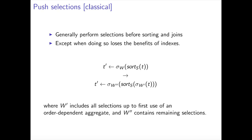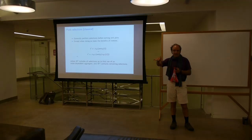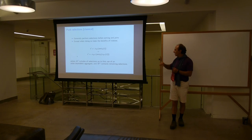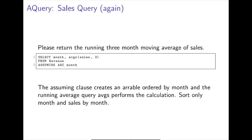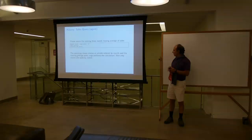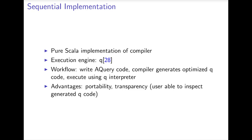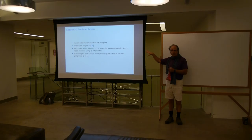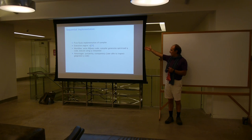So instead, you try to sort as late as possible. In our running example, we'll only sort the two fields that are concerned: month and sales. Our implementation is in Scala. What we would really like is to implement it in Q, but Scala offers — as Jose will argue later — a declarative way of implementing rules, which would be really nice to have within Q, but if we don't have it yet, the compiler here is implemented in Scala.